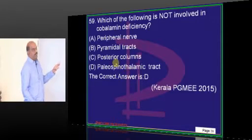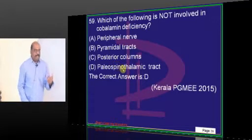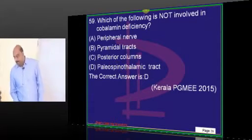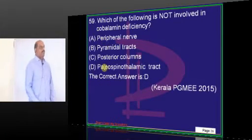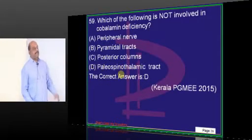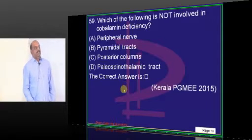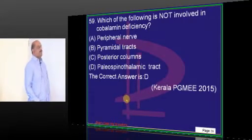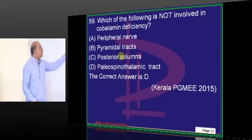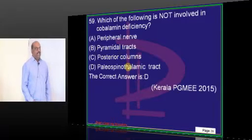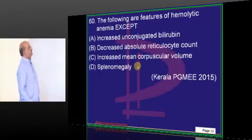Cobalamin deficiency — why do you call it subacute combined degeneration of the spinal cord? Because it affects both the peripheral nerve and the pyramidal tract. The peripheral nerve is lower motor neuron, so in the upper limbs you will have LMN features, and in the lower limbs UMN features — due to corticospinal tract and posterior column involvement.